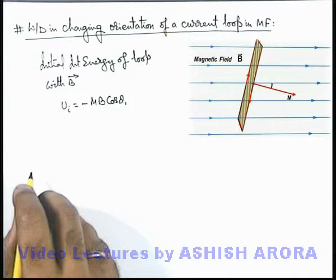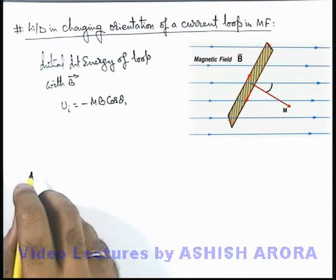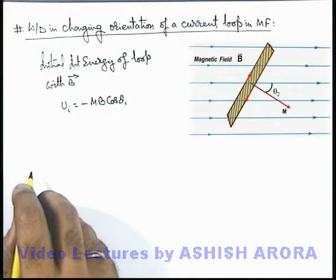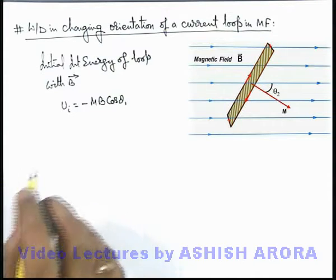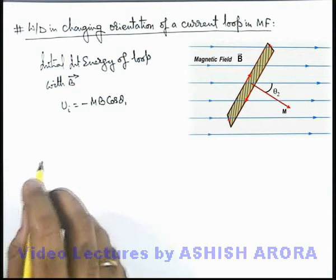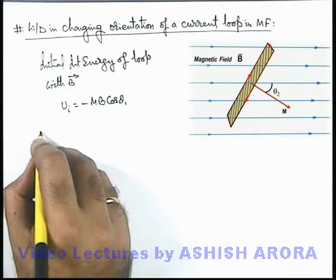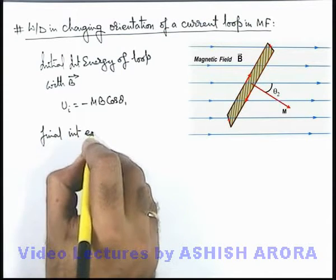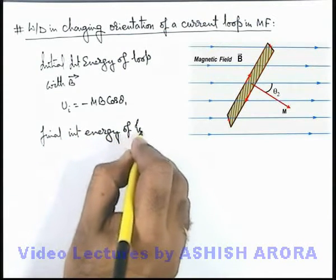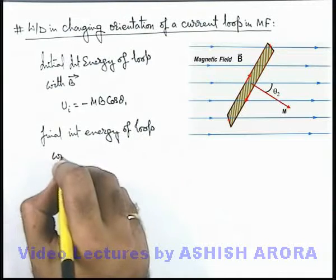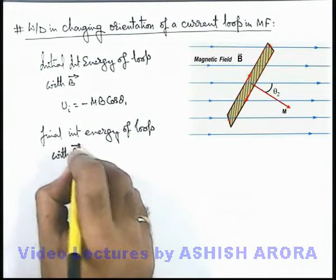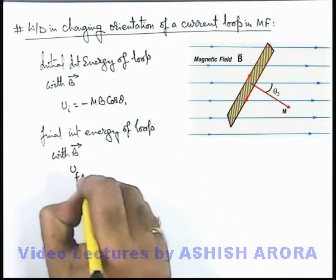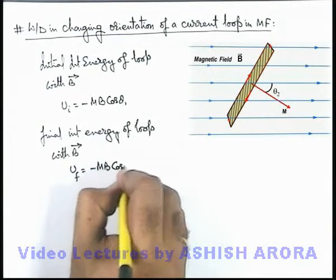Now if the loop is externally twisted to a position where the magnetic induction vector makes an angle theta 2 with the new direction of the area vector or magnetic moment vector, then in the final situation the final interaction energy of the loop with B vector is U final, which equals minus m B cos theta 2.